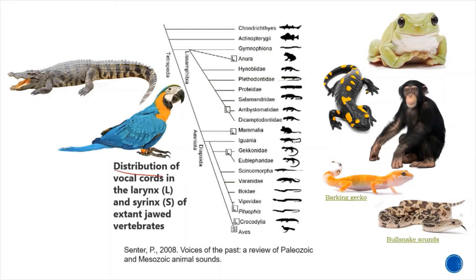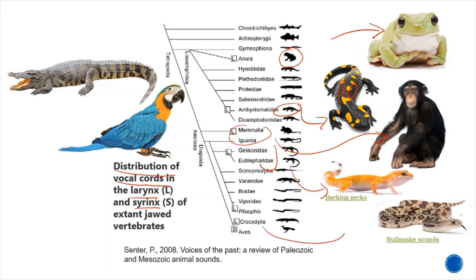Here is a cladogram showing the distribution of vocal cords of the larynx and syrinx in jawed vertebrates. You can see them occurring in anura — frogs — and lungless salamanders only in seven groups of them: mammals, so apes, chimps and other creatures like that; some geckos and lizards; individual elements of snakes like bull snakes; crocodiles; and birds.